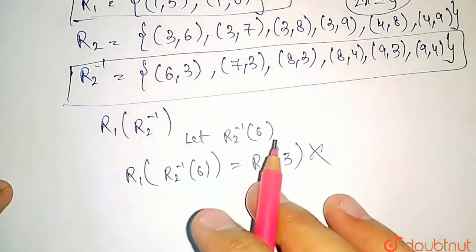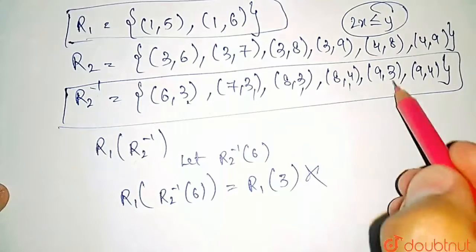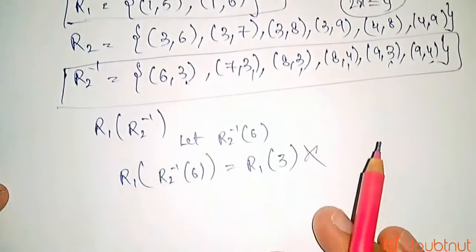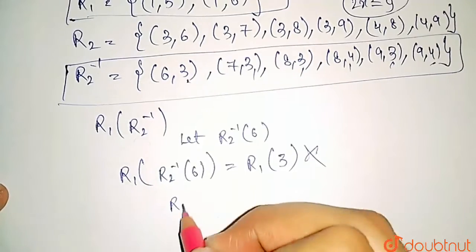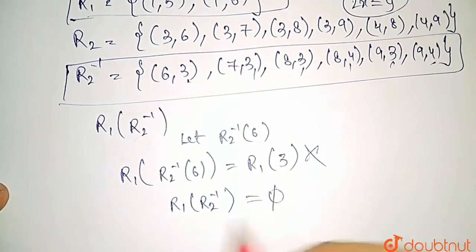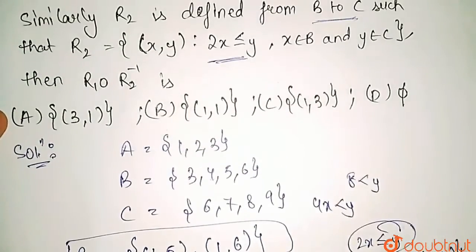Similarly, if we take a close look at each and every output of R2 inverse, no one is matching with the R1 input. Hence, there is no element, there are no elements possible for R1 of R2 inverse. So that is equal to the empty set. So the correct option is option D.